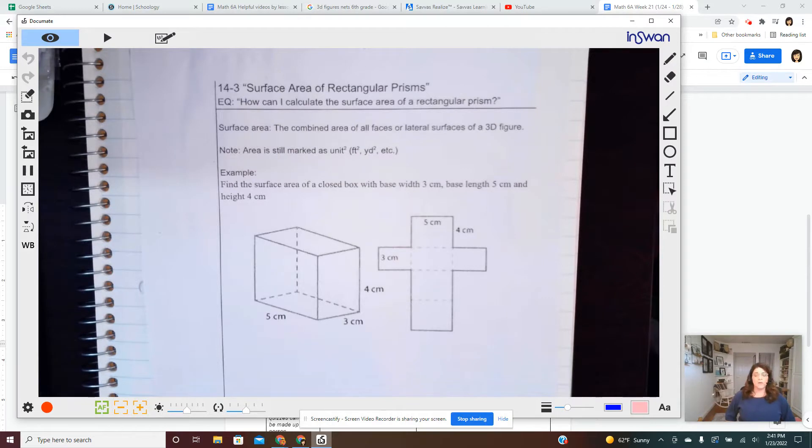Now, rectangular prisms are the only ones I really want to concentrate on for surface area. You can follow the same ideas for triangular prisms, really any hexagonal prisms, anything else, but rectangular prisms are the only ones we're going to do from a practical standpoint.